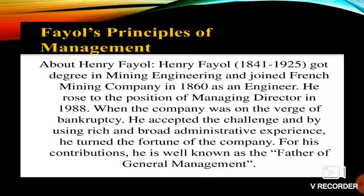Fayol classified industrial activities into technical, commercial, financial, security, accounting, and managing. Henry Fayol was the first to define four functions of management: planning, organizing, directing, and control. He also suggested that the qualities a manager must possess should be physical, moral, education, knowledge, and experience. Apart from all these, Henry Fayol has given 14 principles of management known as 'Administration Industrielle et Générale'.